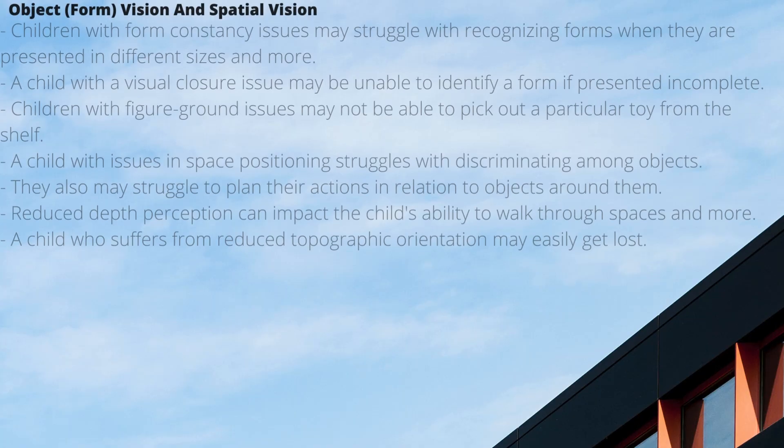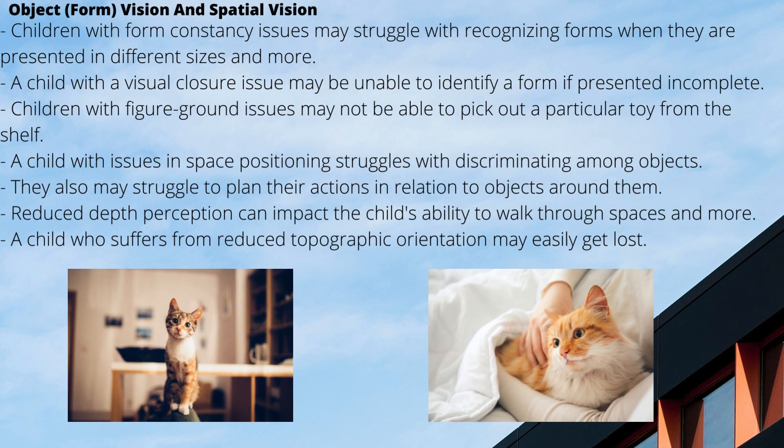Children with poor visual discrimination skills may exhibit impaired ability to recognize, match, and categorize. A child with limited matching skills may be confused with similar shapes and struggle to recognize forms in a complex field. Moving to the final section covering object vision, also known as form vision, and spatial vision: children with form constancy problems may struggle with recognizing forms when presented in different sizes, which can affect the child's ability to organize and classify perceptual experiences for meaningful cognitive operations.